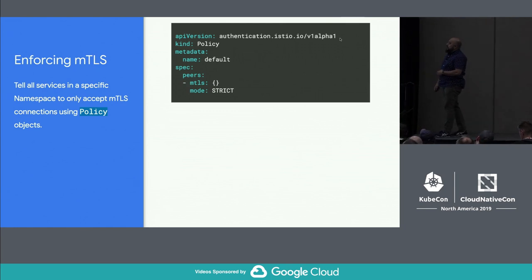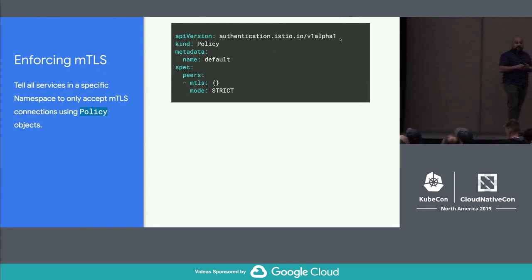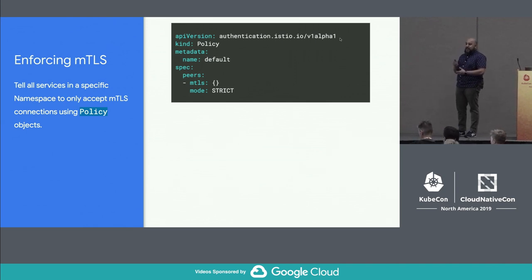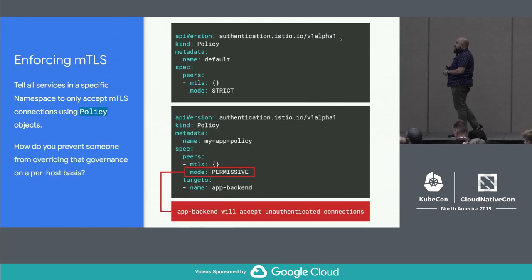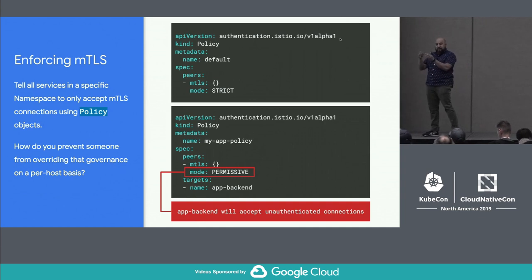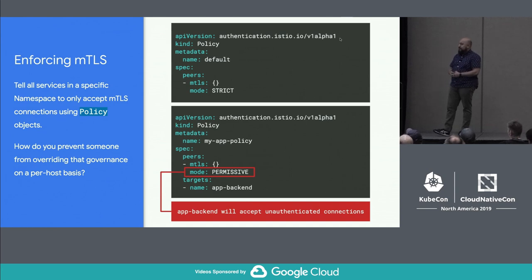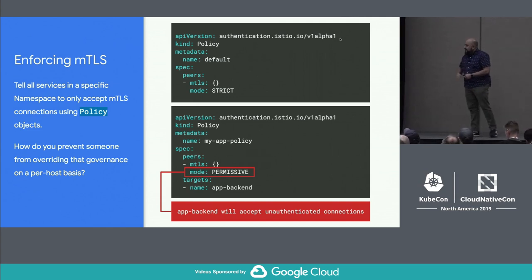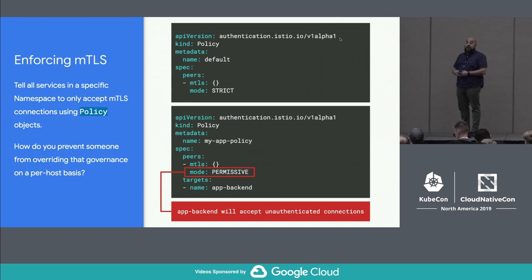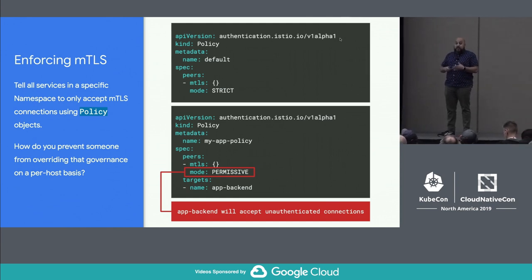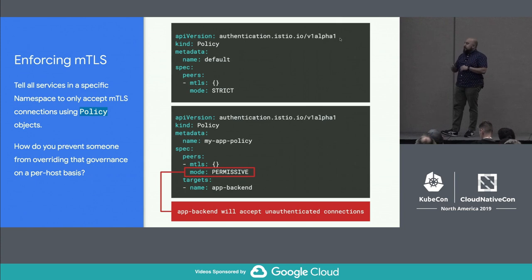The next one is enforcing MTLS. You can write a top-level Istio policy object that says, for everything in the namespace, all services must only accept MTLS connections. But there is actually an ability to override this at the host level — you can write another policy saying my service is special, I don't want to accept MTLS connections, I want to go permissive. Now that service at back-end will actually accept unencrypted or unauthenticated connections. This is something you want to be able to catch — you may have a corporate policy that says we're only doing MTLS for compliance or regulatory reasons.